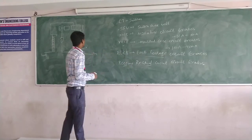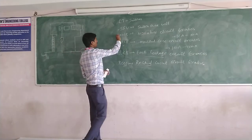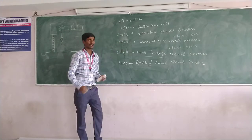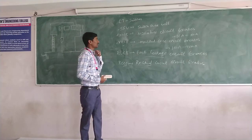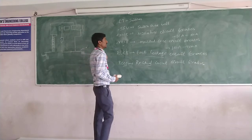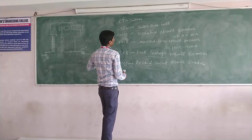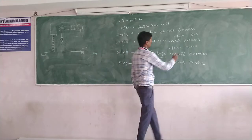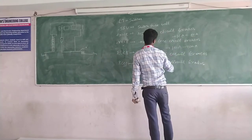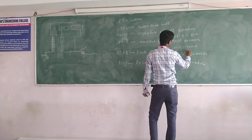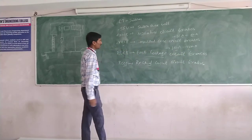Now let us see MCB and MCCB. Both are the same in terms of construction. But the MCB is used from 16 amperes to 80 amperes, and the MCCB is used from 100 amperes to 1600 amperes.